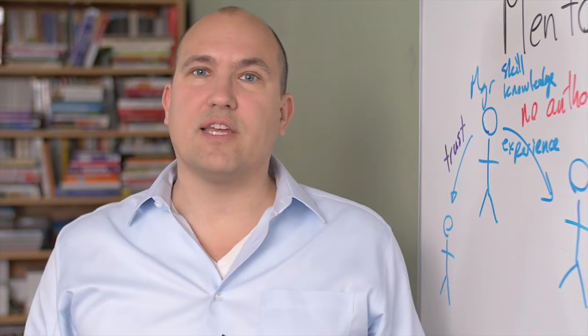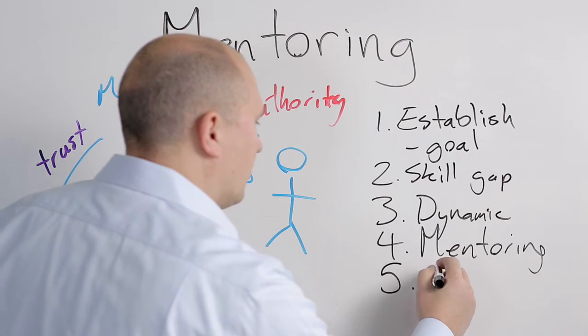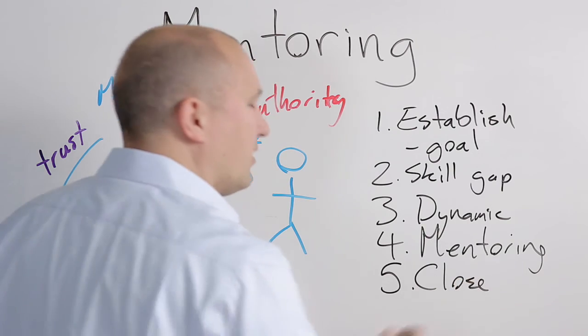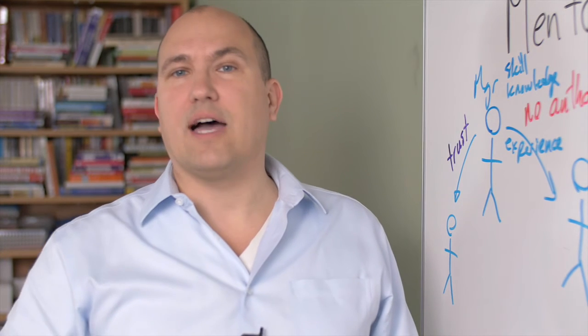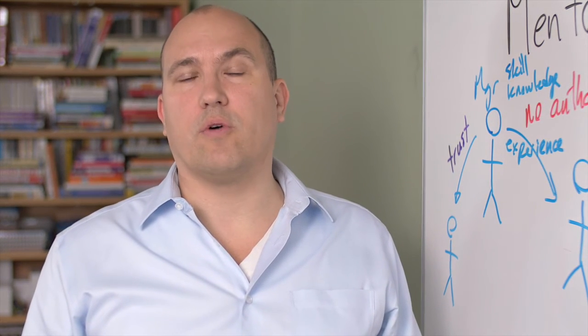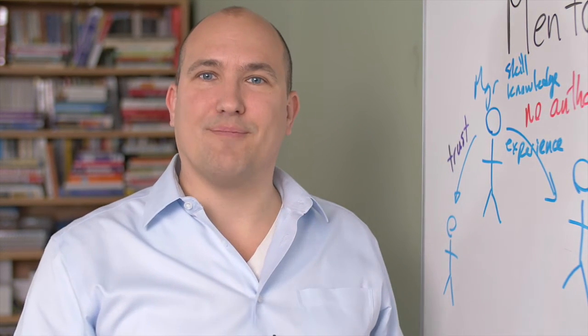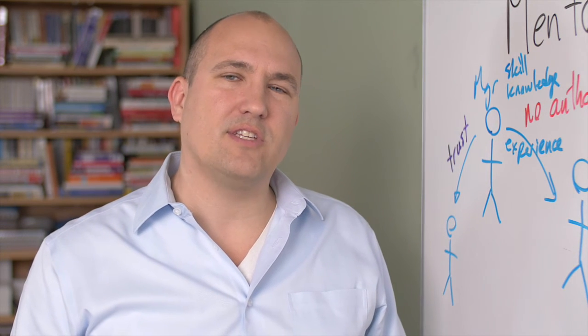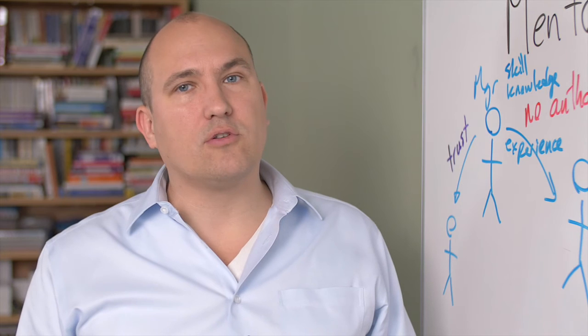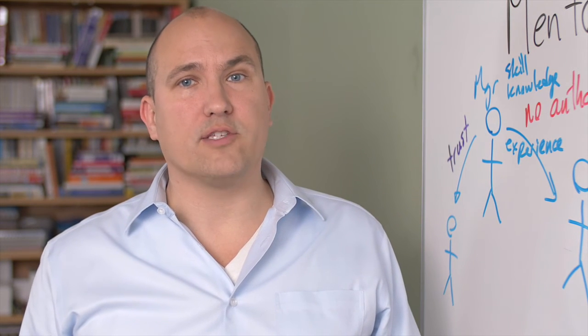The fifth stage is about closing off the relationship. When you close the relationship, especially if you've been successful, that will usually lead to an ongoing friendship, not just a mentoring relationship. If the goal hasn't been successfully achieved, you probably have to look at other more formal ways of providing skill.